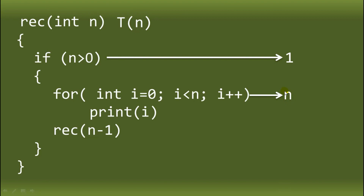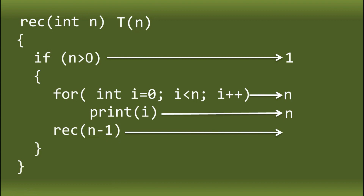If you're wondering how the for loop's time complexity is computed as N, I already have a video about that covering examples with increment by 1, decrement by 1, increment by 2, multiply by 2, and others — I'll put the link on screen or in the description box. So if the time complexity of the loop is N, we can also consider the time complexity of what's inside the for loop as N. Then we have the recursive call: `rec(N-1)`. Since the function `rec(int N)` is the same as T of N, we can consider this recursive call as T of N minus 1.